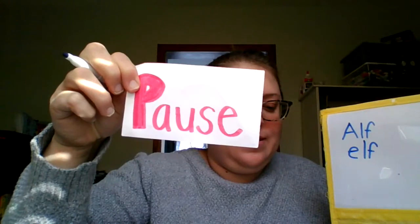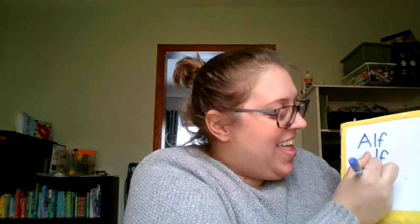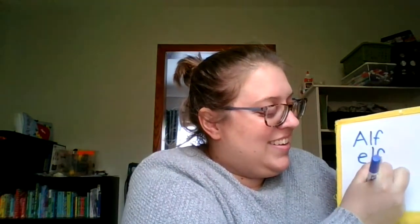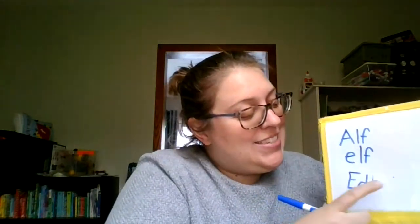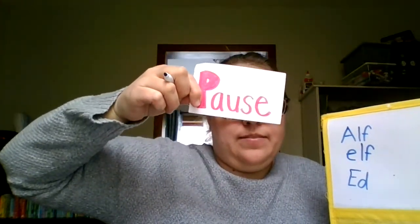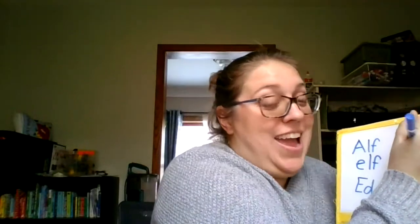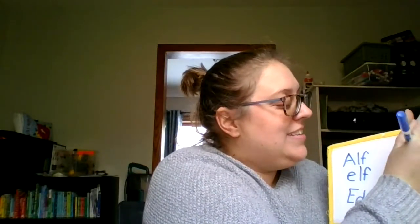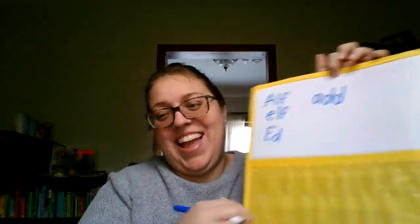Next word — Ed. Someone's name is Ed. And because it's a name, it needed to start with an uppercase letter, right? Last word is add. This word ends with a double D. We only hear the sound once, but it ends with double D. Add — when we put two numbers together, we add. See if you got the letters in add. Did you get them? Nice work.